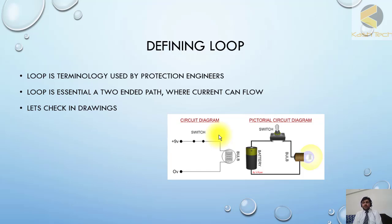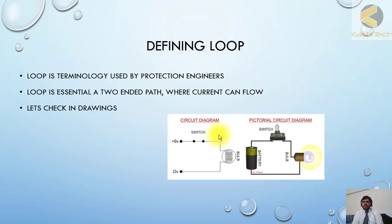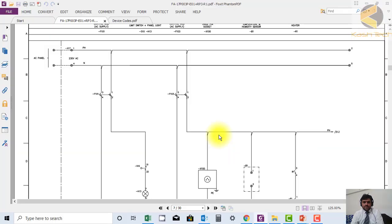There can also be more than one DC loop. For example, if you have a duplicate protection system plus backup, normally the first protection distance relay runs on one DC loop, another protection runs on another DC loop, and the backup control works within the second loop. Let us look at the drawing.